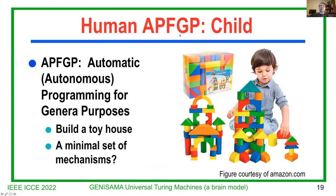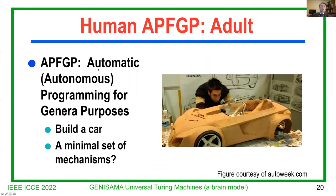Now, human APFGP. Although the A could be automatic or autonomous — I originally started with automatic so people could understand better — in fact it's autonomous. It's not just automatic in terms of a vehicle moving forward and making turns; it's autonomous, just like this vehicle. Autonomous programming for general purposes. For example, if you build a car, the brain is doing APFGP. The question we'd like to ask is: what's the minimal set of mechanisms that enable APFGP? And I get to that in this tutorial.